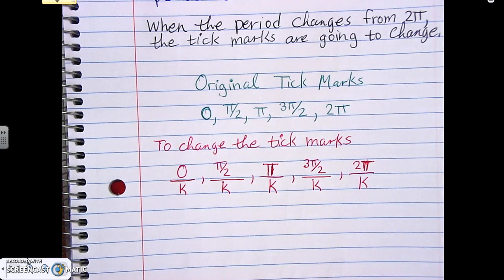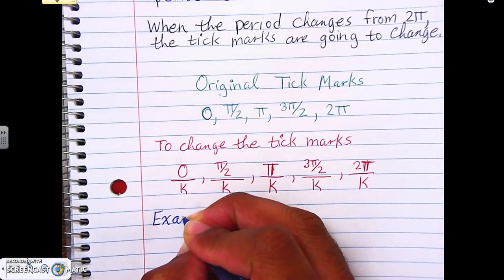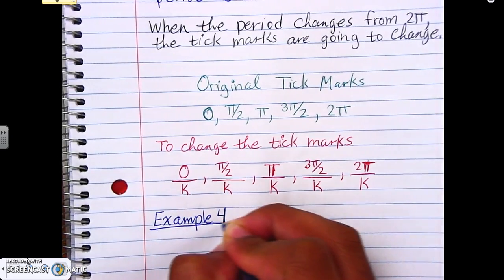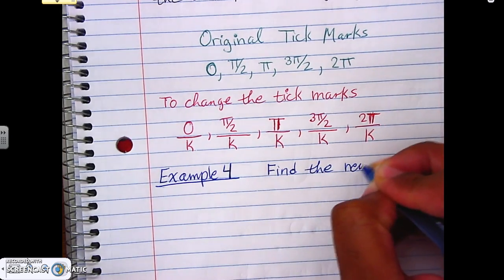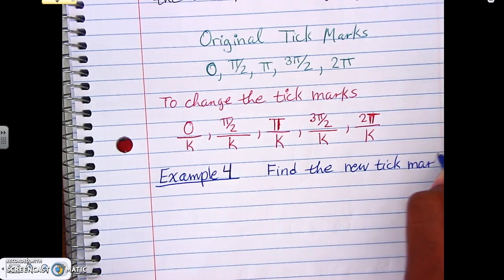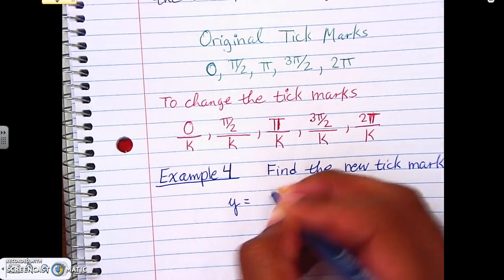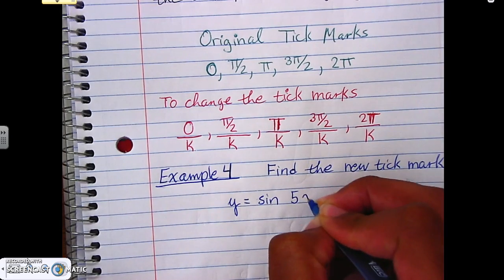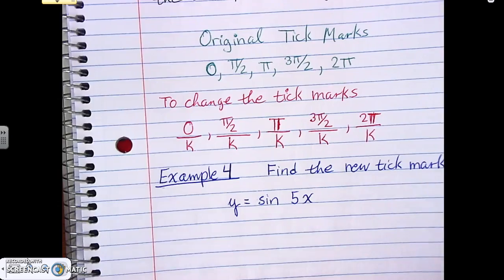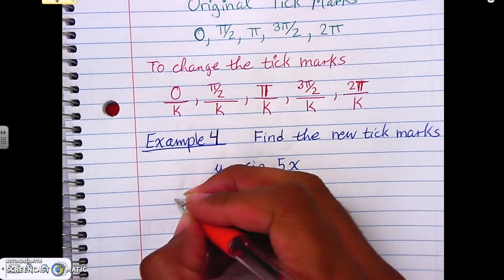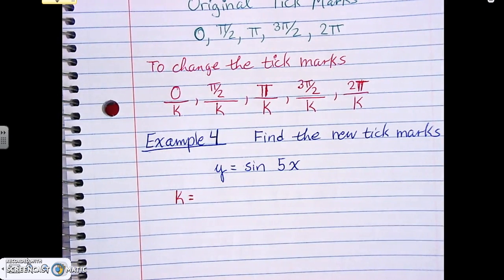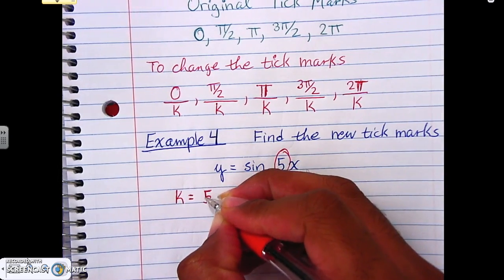We're going to Example 4, where we actually deal with changing tick marks to match the new period. The direction is simply: find the new tick marks. We're using the function y = sin(5x). The first thing that's always important is to find what k is. Here, k is 5 — it's the number in front of x.